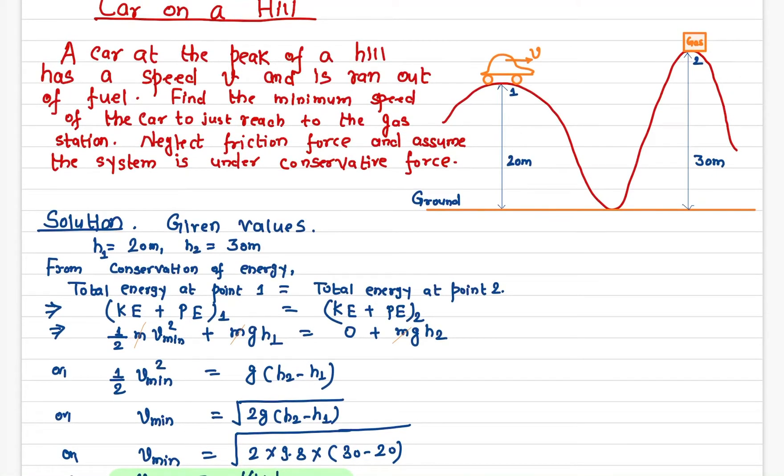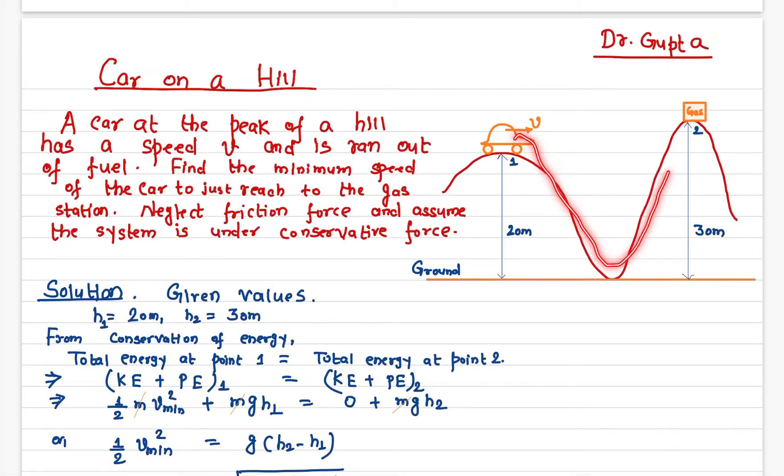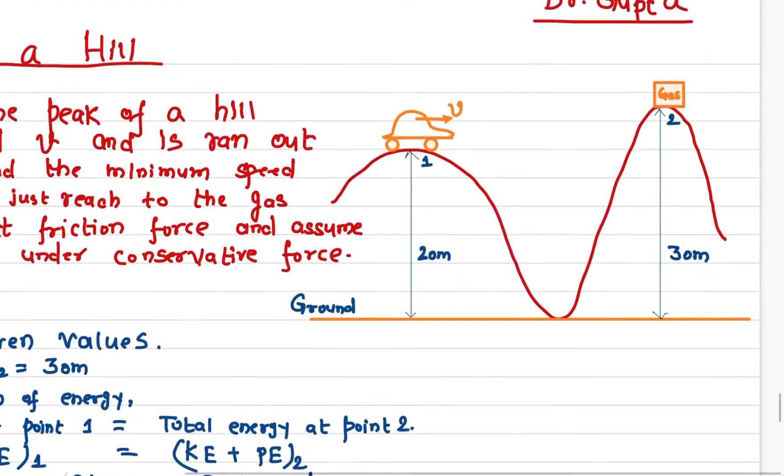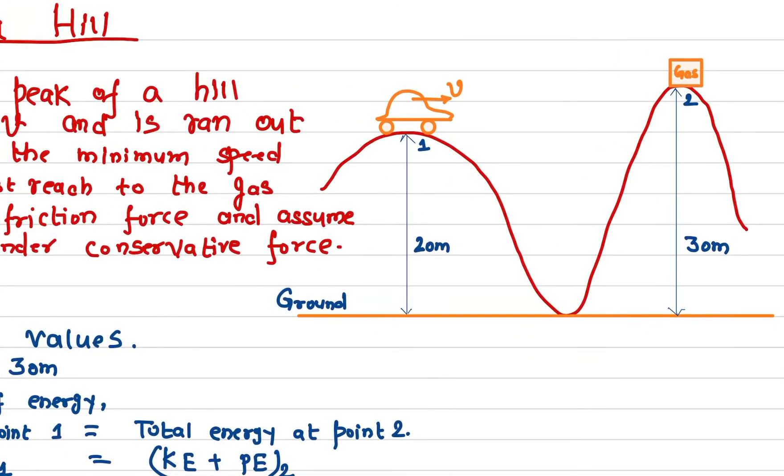We assume there is no friction force at all. With this minimum speed, the car just reaches this gas station. Now I would like you to do one more thing: what is the speed of the car at the point which is 25 meters from the ground? Calculate the speed at that point and write down your answer in the comment section below.